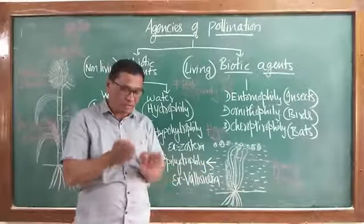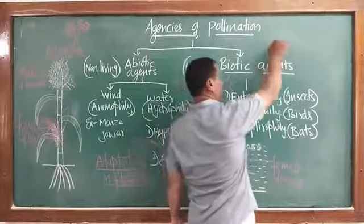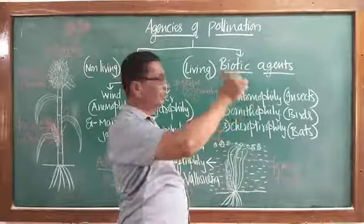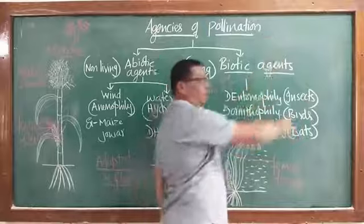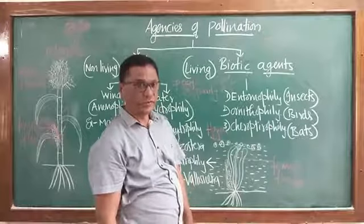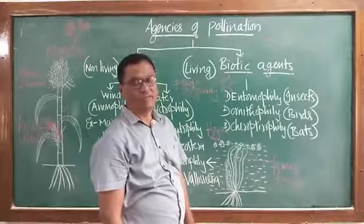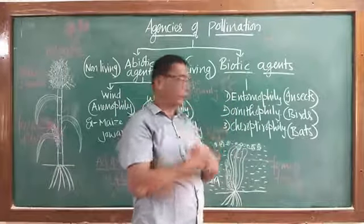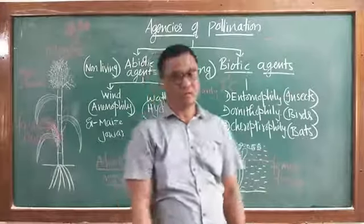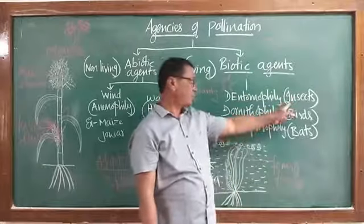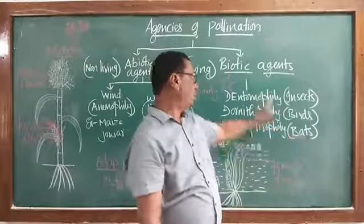The adaptations for entomophily are: flowers are large, brightly colored, conspicuous (or small but grouped); pollen grains are sticky with spines or variously ornamented; stigma is also sticky. Honey bees are the most common insects bringing about entomophilous pollination.